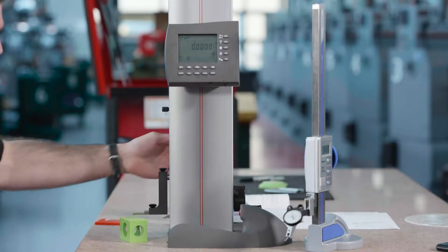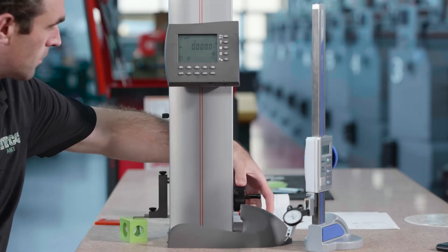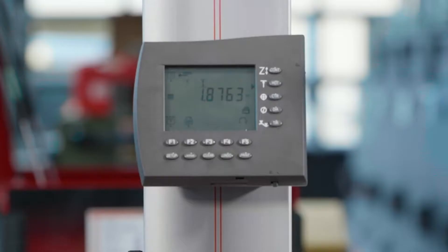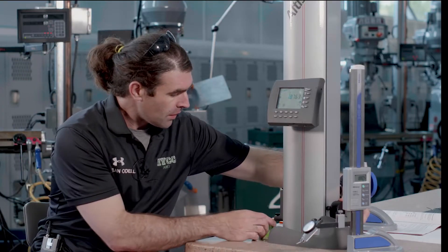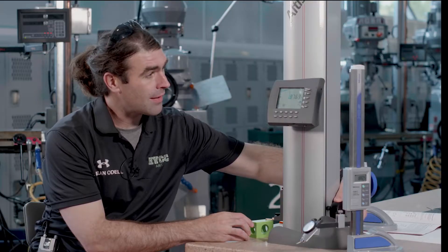I'll measure this block. I'll place it under here, lower it down until it beeps, and I've got a measurement of 1.8763, pretty close to what it should be. Now, if I go measure another point on this block, we get a slightly different number.